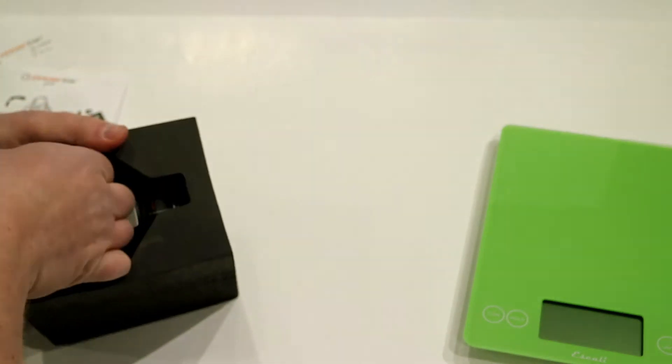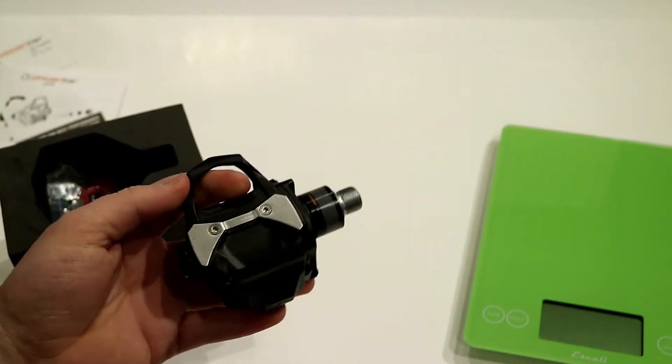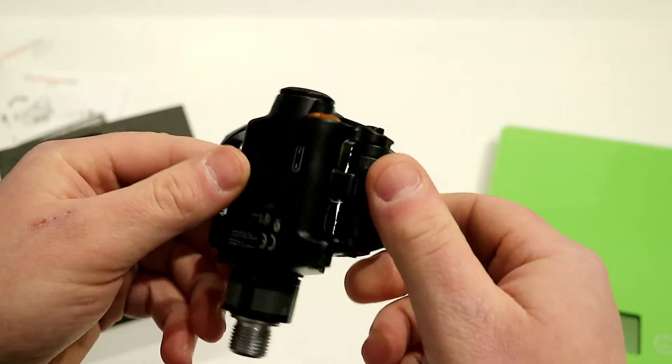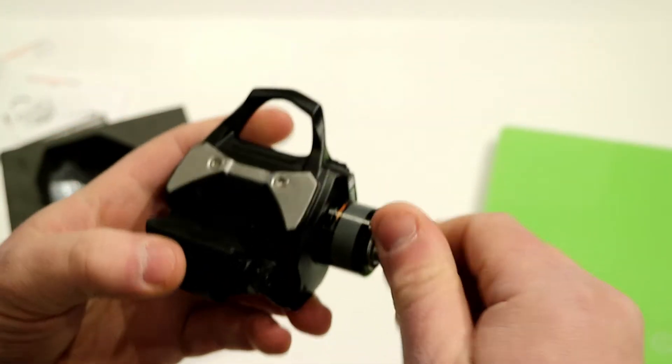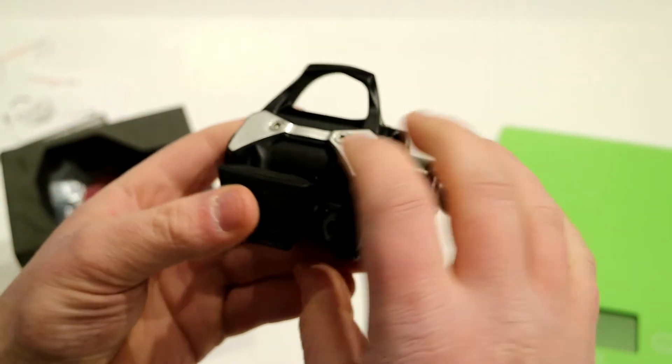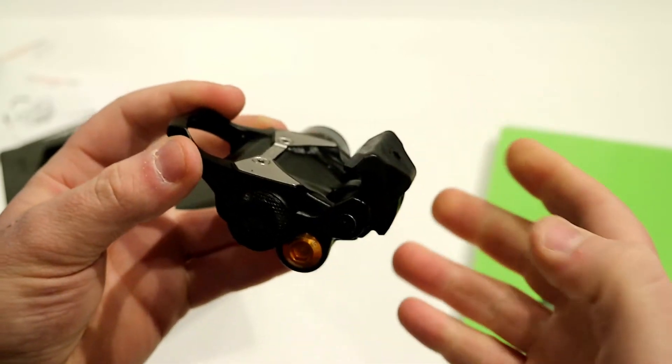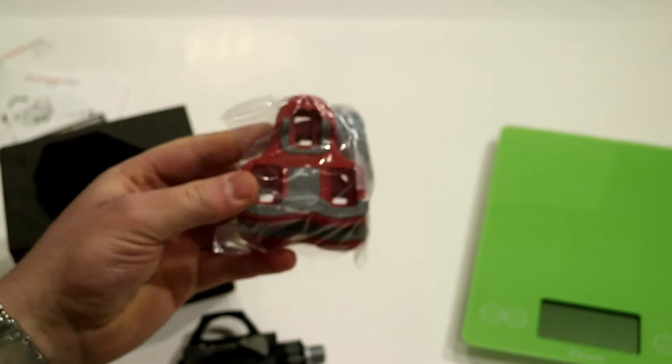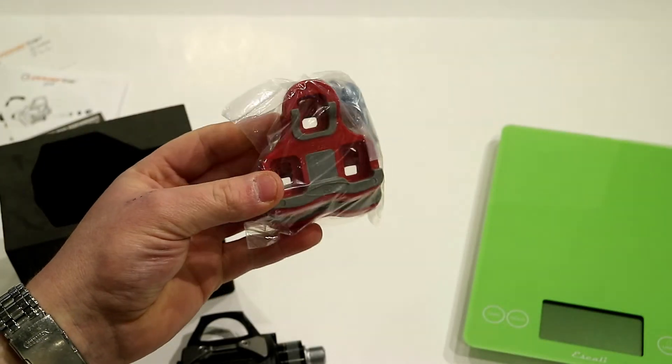And if we go ahead and pull the pedals out you'll see that they look quite nice. This pedal itself is basically a little bit thicker than your standard Keo pedal from Look but it uses the same cleat as a Look Keo. And when we unbox this you'll notice that it does come with the cleats as well which is a nice little feature.